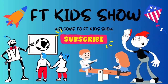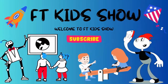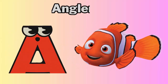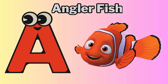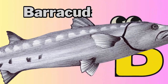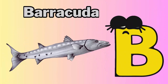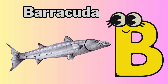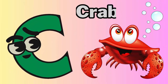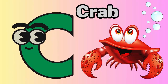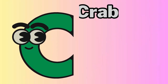Welcome to F.T. Kids Show. A is for anglerfish — anglerfish. B is for barracuda — barracuda. C is for crab — crab.